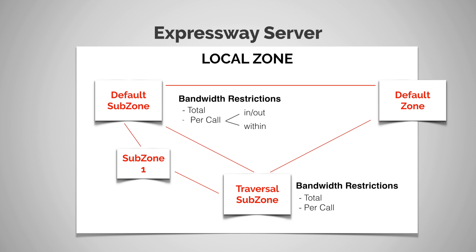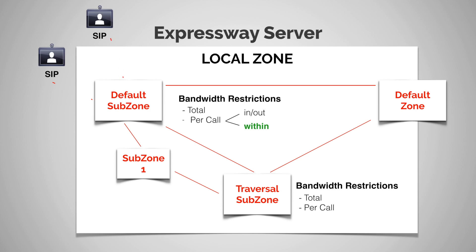So what is per call within? Per call within means, for example, if I have two endpoints registered to the same subzone — say the default subzone — and they place a call between each other, that call is entirely within that subzone. The within bandwidth will apply to this call.